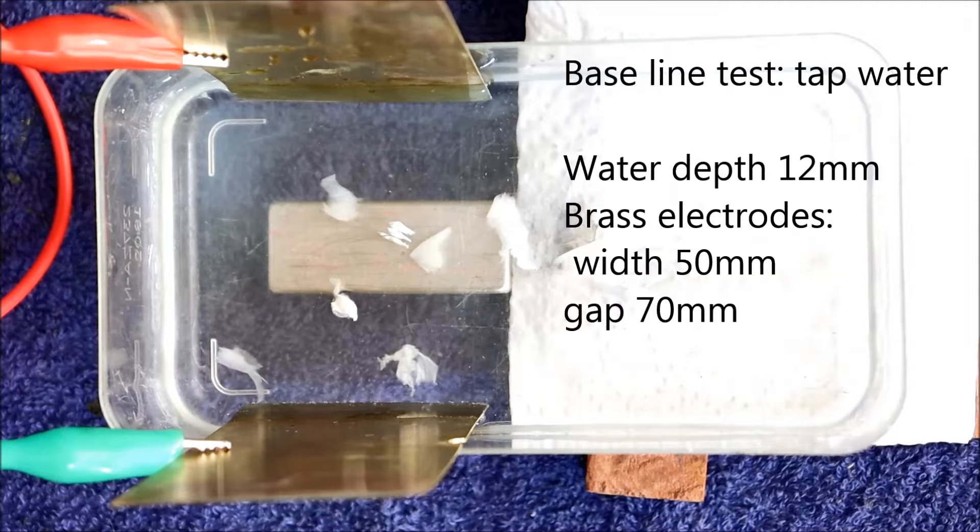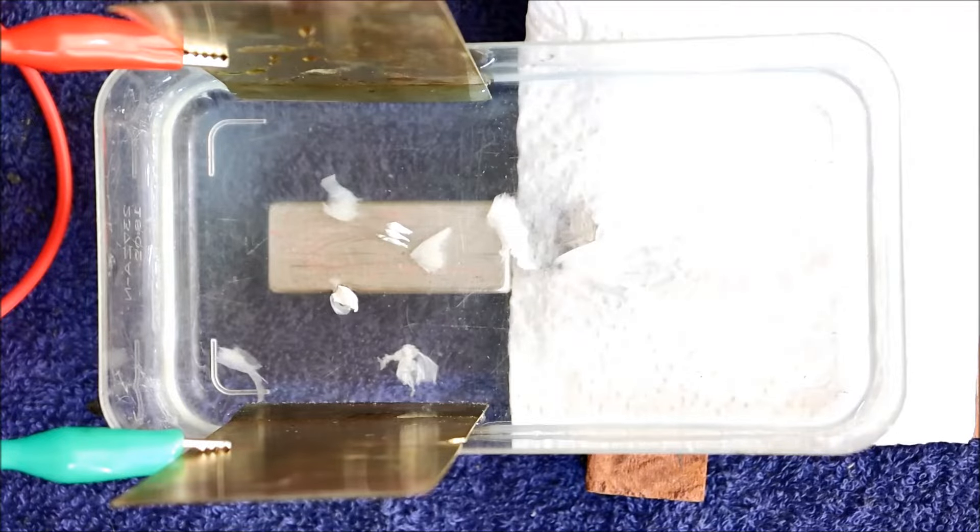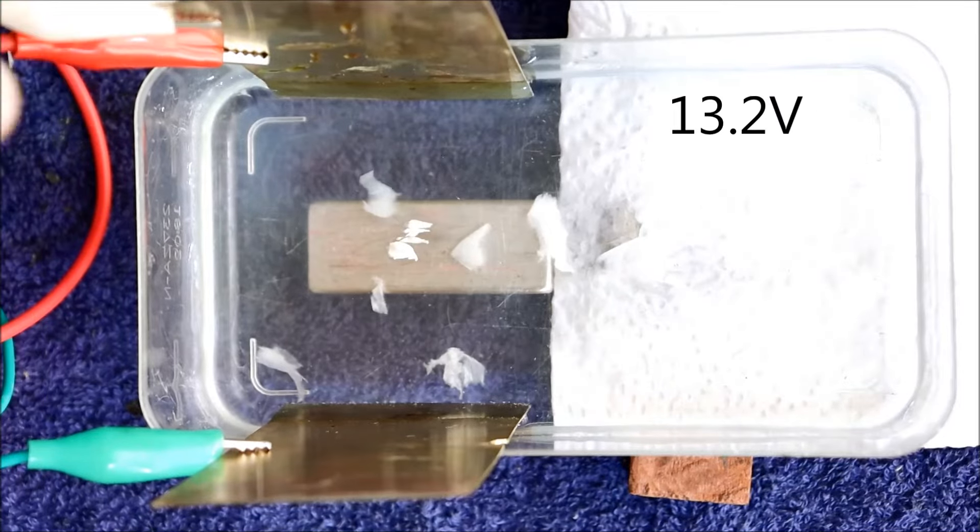But first let me show you what happens to the graphite flags if I send an electric current through them. I might as well add the magnet at the bottom and see what kind of magneto-hydrodynamic motion we get. Let's add some power.